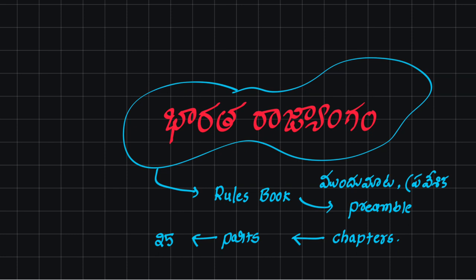We have a book set of chapters — Parts are the Parts. We have 25 parts. We have a name for each part. Simple.